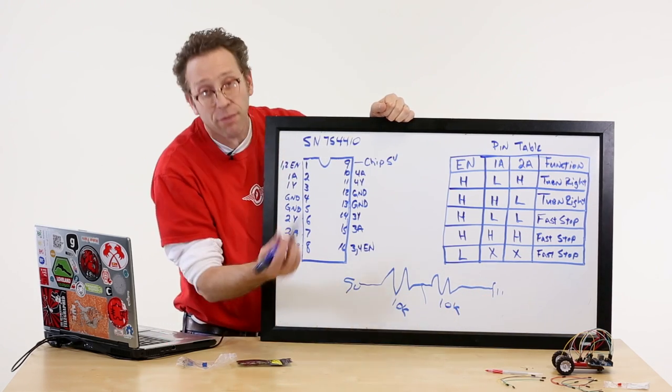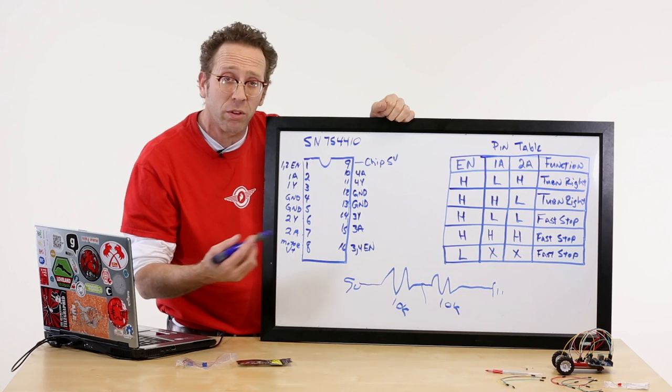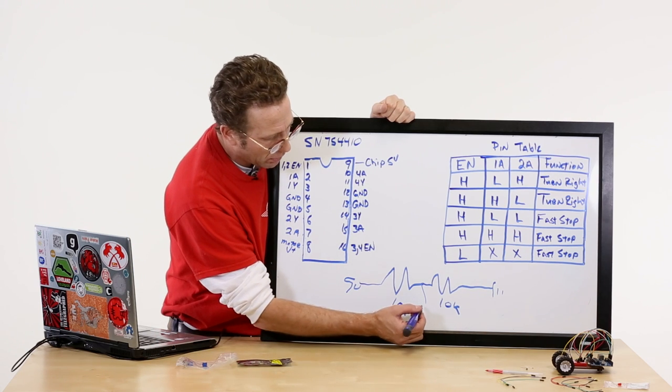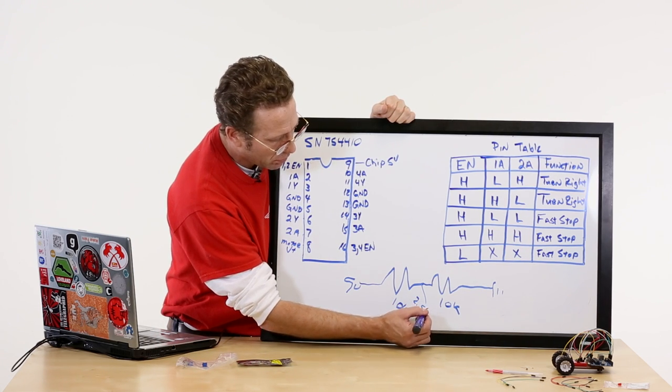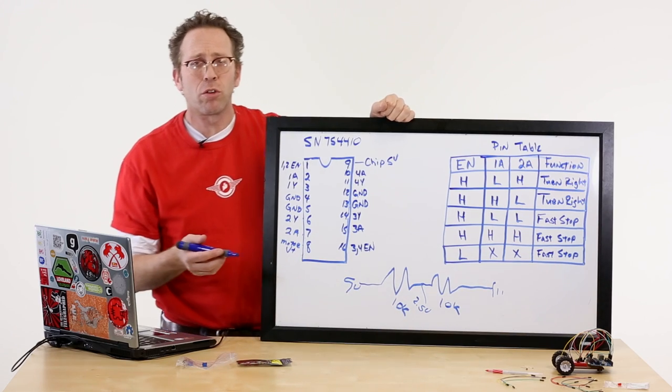If I put 5 volts here and I put ground over here, if I read right here, I have half the total resistance of the circuit, which means I'm going to get half the voltage, meaning 2.5 volts here. And this is how voltage dividers work.